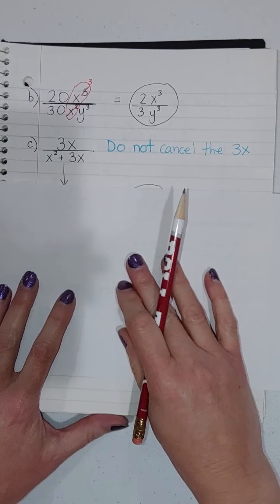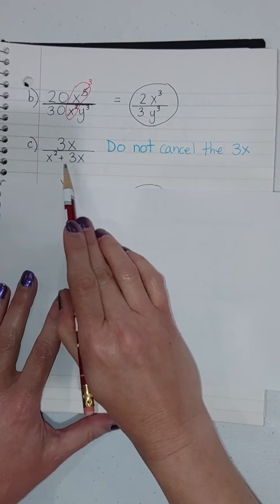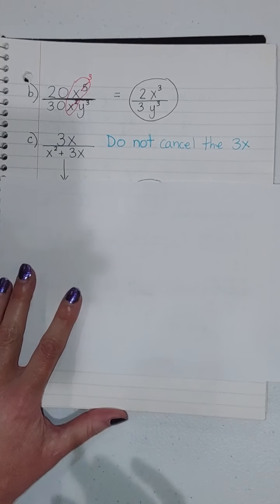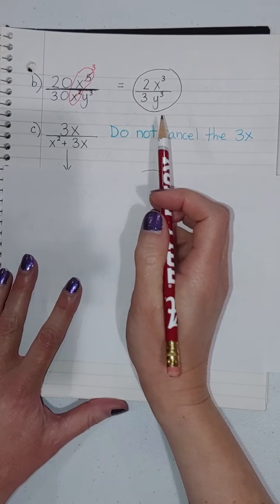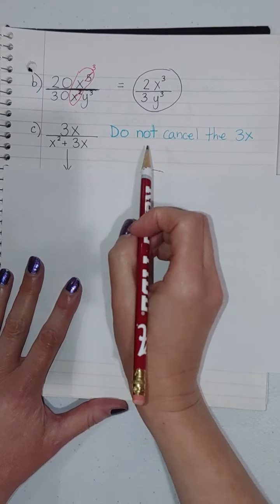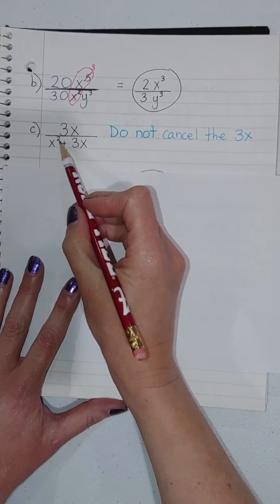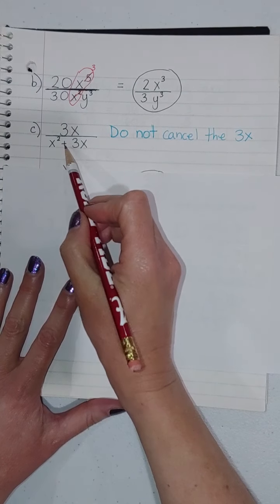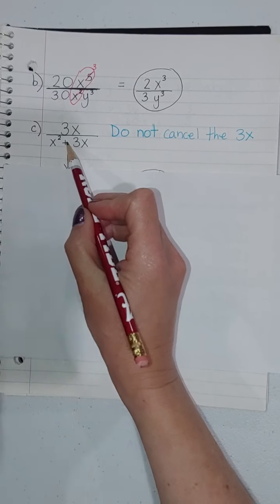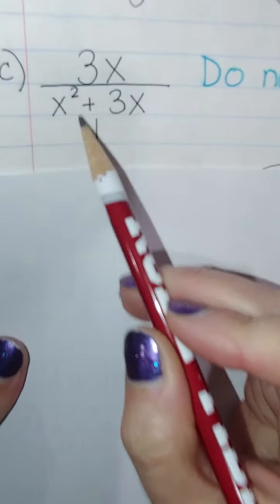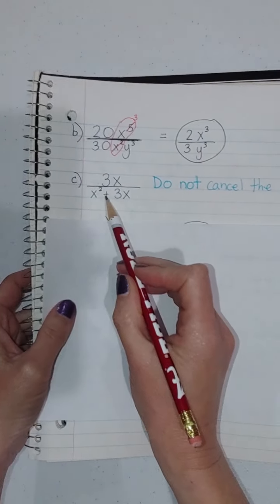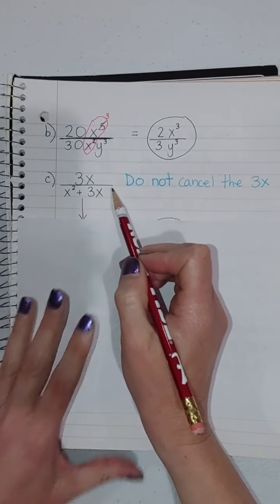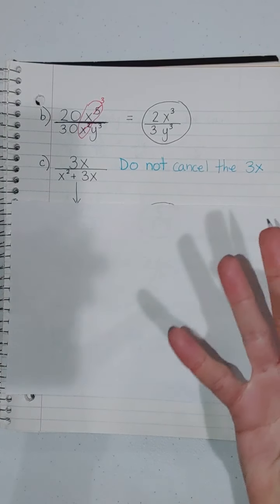Now, 3x over x squared plus 3x. This is where you will start getting canceling-crazy. You'll want to say, 'Oh, I see 3x's, I'm going to cancel those out.' No — you cannot do that. That plus sign right there is what is stopping you. If that were a times, then yes, cancel those. But it's not a times, it's a plus. So you cannot cancel these. Trust me, if you could, I would — I'm not trying to make this harder.